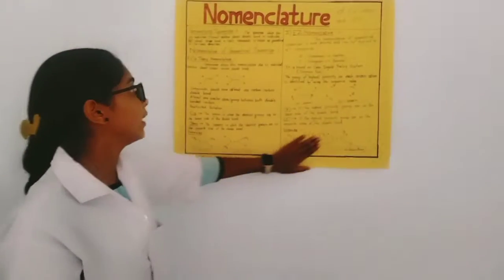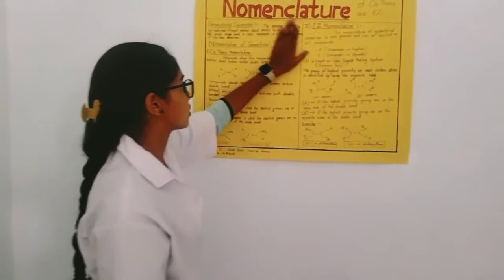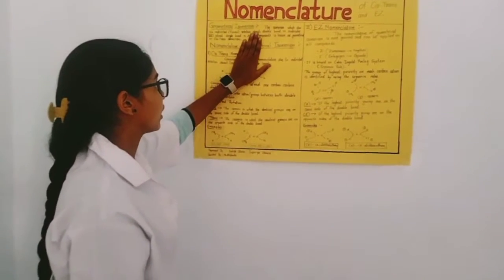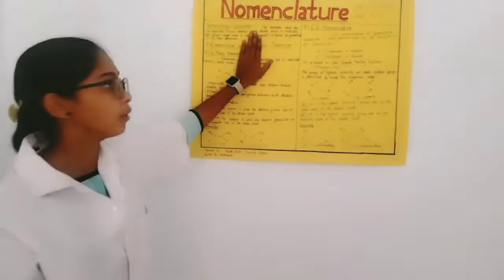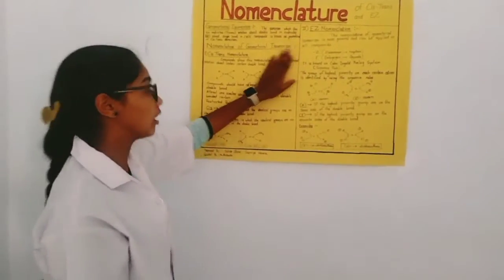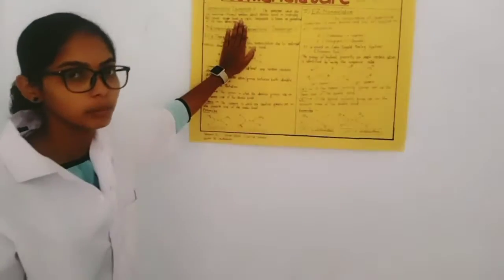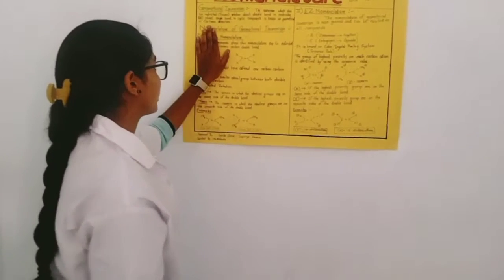In that, we have to discuss the geometrical isomerism stabilization. Geometrical isomerism is the isomerism which is due to the restricted rotation about double bond in alkene or about single bond in cyclic compound, is known as geometrical or cis-trans.